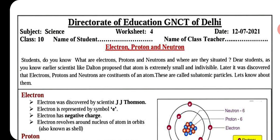यानि कि Dalton ने कहा था कि इसको और विभाजित नहीं किया जा सकता, यह एक small particle है। लेकिन atoms तीन अन्य particles से मिलकर बनता है जिसको electron, proton और neutron कहते हैं।